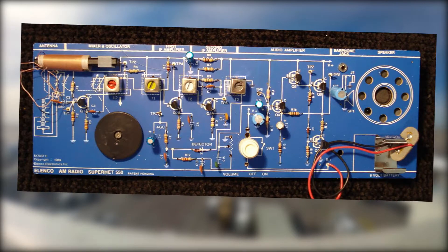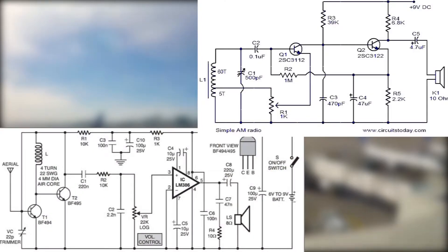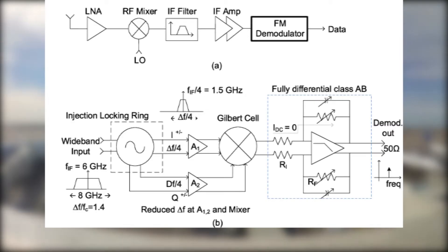AM radios are simpler and less expensive to build than FM radios. This is due to the fact that in an FM system, transmitter and receiver are more complex, as variation of the modulating signal has to be converted and detected from corresponding variation in frequencies — i.e., voltage-to-frequency and frequency-to-voltage conversion has to be done.